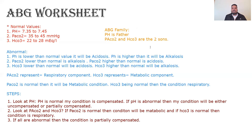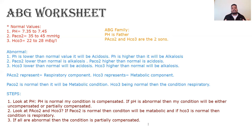Whenever there is a condition where all three are abnormal, the first preference will always go to pH to decide what the condition is. For example, if pH is acidic, the condition has to be acidic — it cannot be alkaline. If pH is alkaline, then the condition has to be alkaline. So when I say pH is the father, it means it is the family name — the family name will continue as the father's name is.